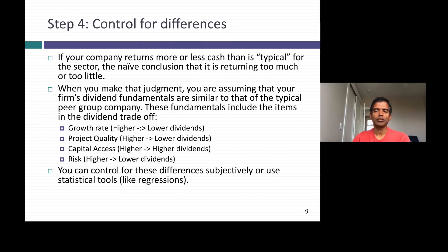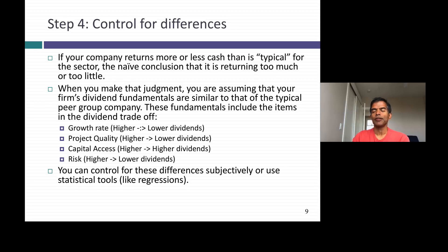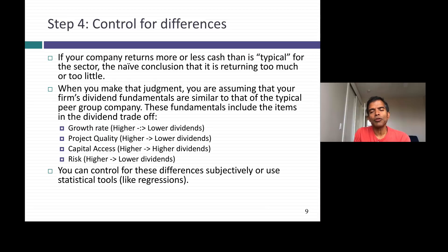Don't jump to conclusions yet — in the fourth step you need to control for differences. If you have high-growth and low-growth companies in the same sector, you'd expect high-growth companies to pay out less in dividends. Companies with better projects should also pay out less. Larger companies with more access to debt and equity markets pay more in dividends, and riskier companies should pay less. So you want to check for growth, project quality (measured by return on equity or return on invested capital), capital access (market cap is a good proxy), and risk (standard deviation or beta). If there are differences based on these fundamentals, you can see if your company's dividend level can be explained by them.